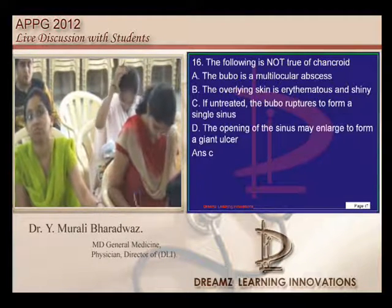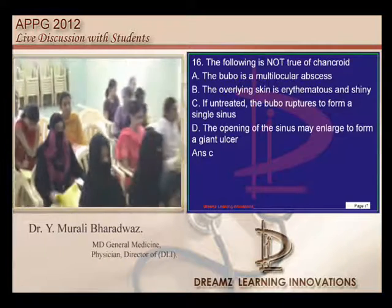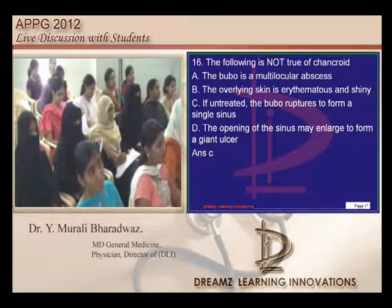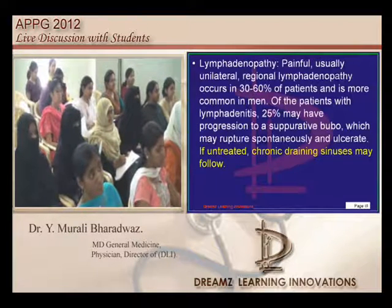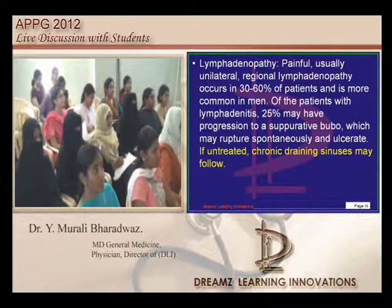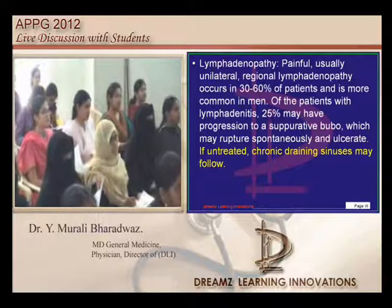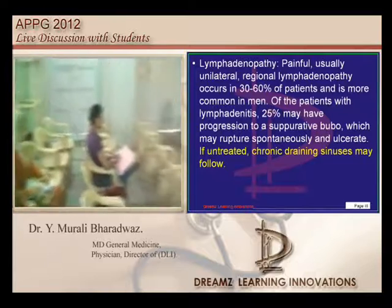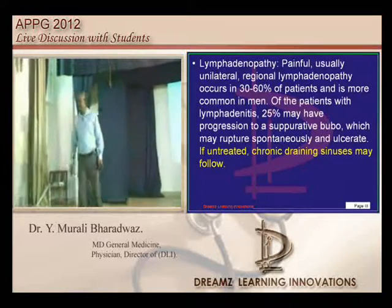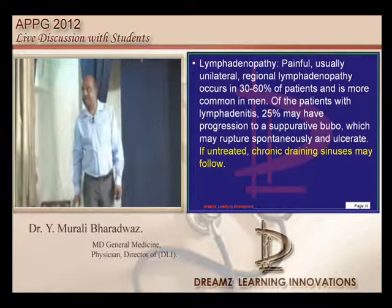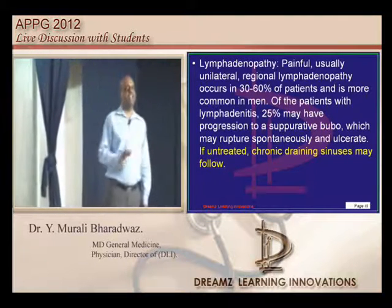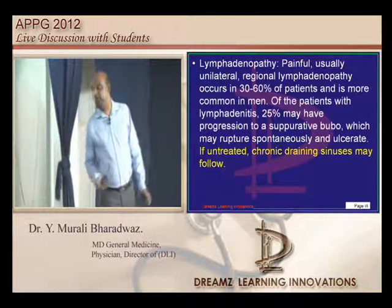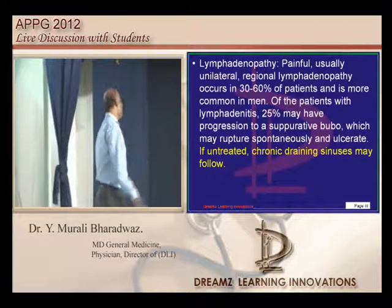Regarding chancroid: if untreated, the bubo ruptures and forms multiple sinuses. The examiner framed the opposite option as 'single sinus.' So even if you are not sure whether chancroid forms sinuses, that single sinus option is inviting you — the bubo ruptures and forms multiple sinuses, not a single sinus.